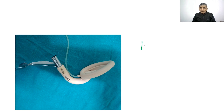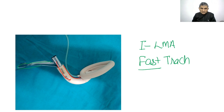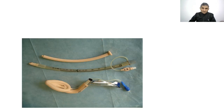Another modification is the intubating LMA, also known as the Fastrach. Unlike C-Trach which has a camera, Fastrach is used for intubation. It has an anatomically curved airway tube and an integrated handle. When the endotracheal tube — a special flexometallic tube — is passed through the airway tube, it comes out at the tip and enters the trachea. The LMA is then removed using a stabilizer, completing the intubation.